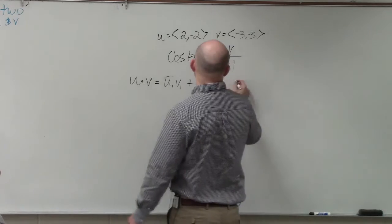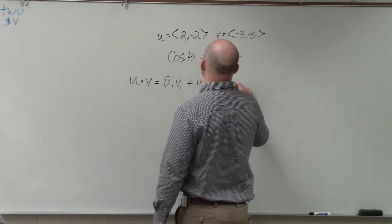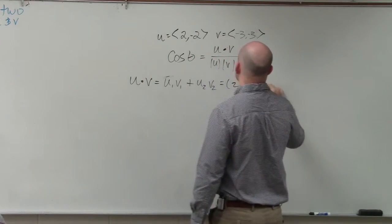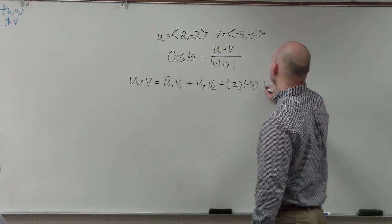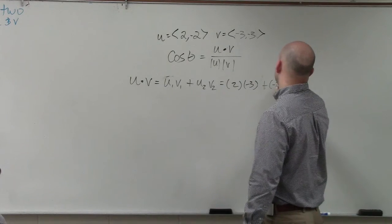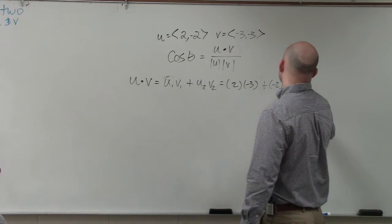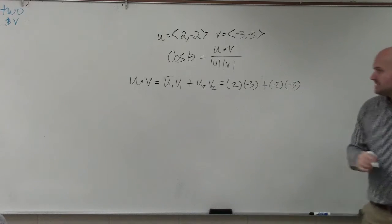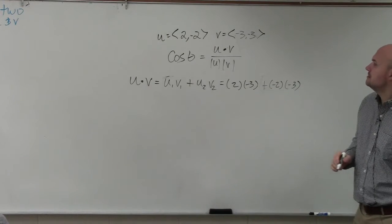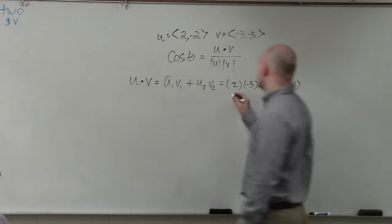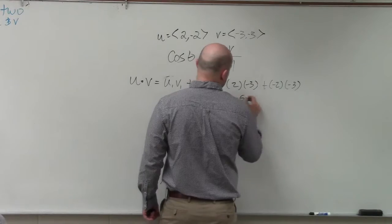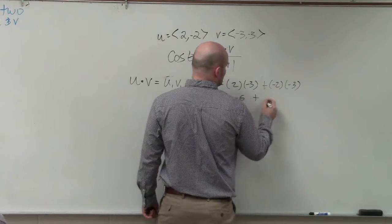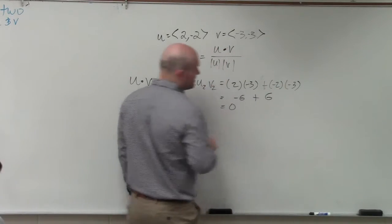So that's going to be 2 times negative 3, plus negative 2 times negative 3. Well, 2 times negative 3 is going to be negative 6, plus a positive 6, which is 0.